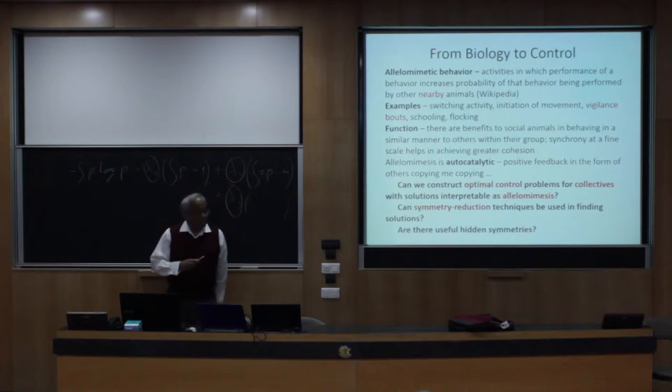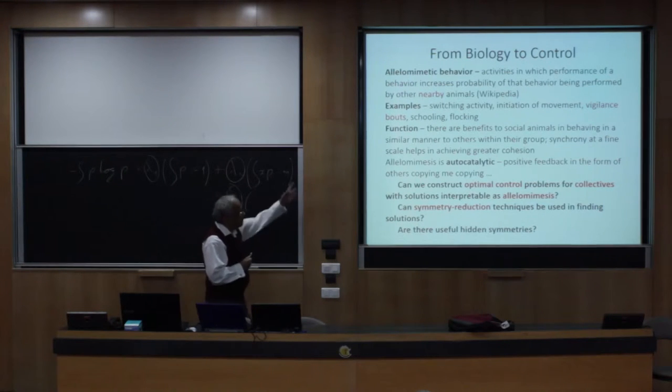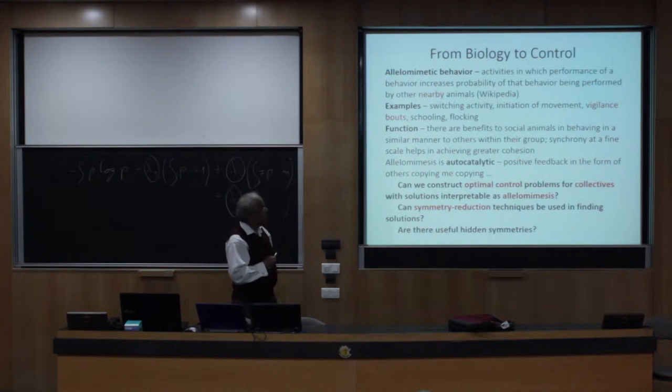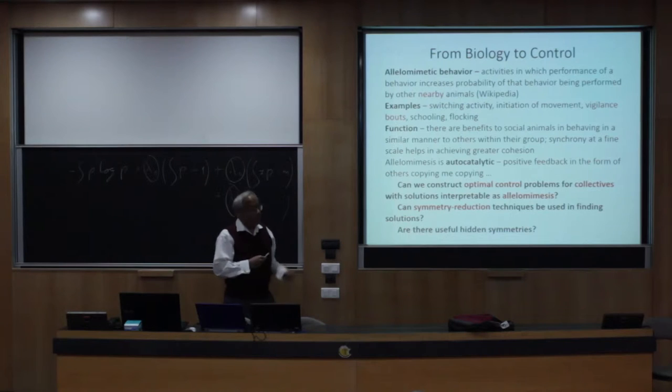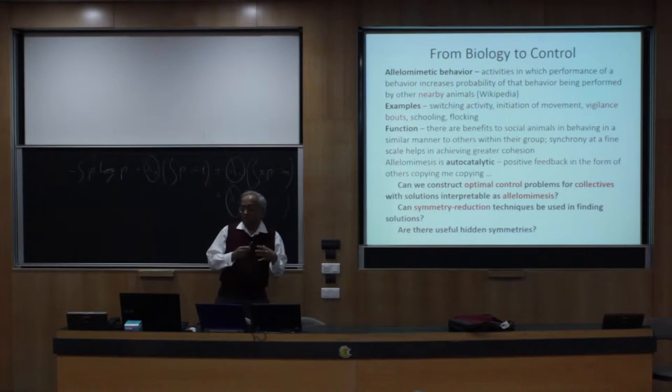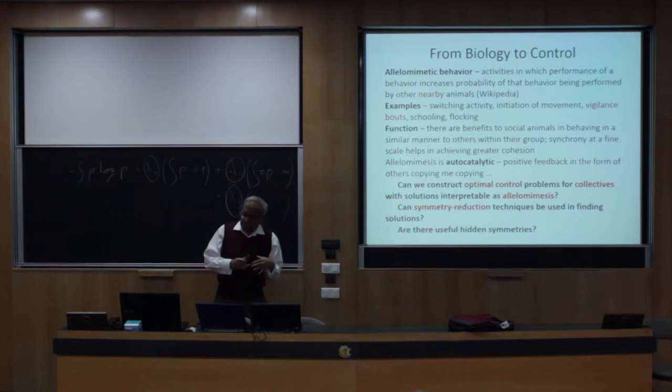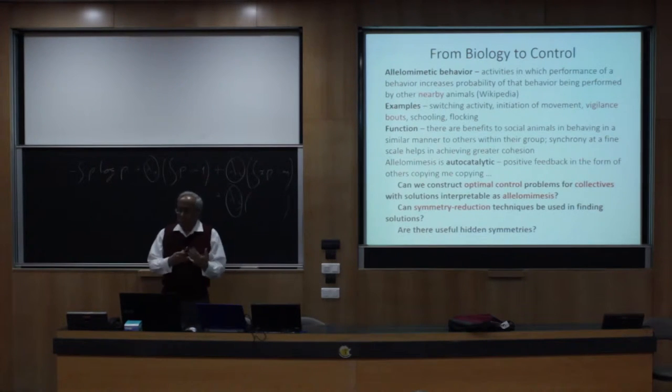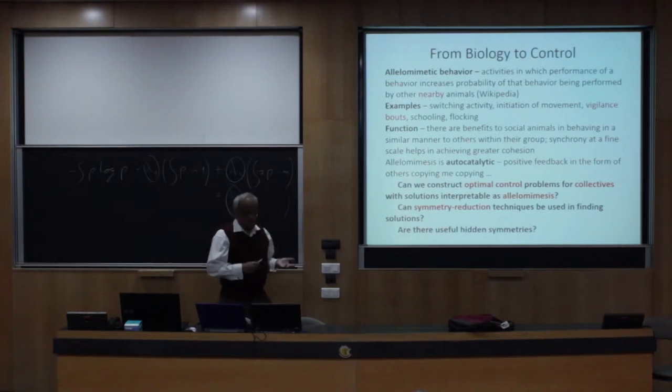And so my story has to do with taking from this biology to control a set of ideas. So the behavior called allelomimesis, as I pointed out, has to do with copying, and copying nearby animals actually. And so there is some sort of an interaction taking place between animals that are close enough because they recognize each other, they visually observe each other. And this copying may arise in various varieties of things. For instance, you may be grazing and then you stop grazing and move. Or you may be not doing anything and suddenly you do something, you switch action. Or you may start from another quiet condition into a condition of vigilance because you have somehow heard something that suggests that there is danger nearby.